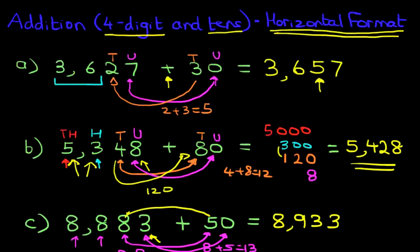It looks more complicated than it is. Have a practice with a few numbers, four digit numbers and tens. And I promise you, after a short period of time, you'll be able to do these mentally. So that is the addition of four digit numbers and tens in the horizontal format.